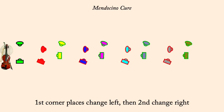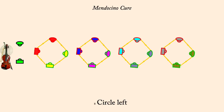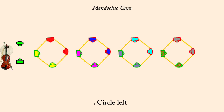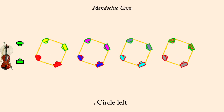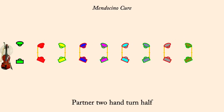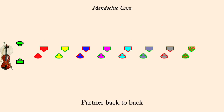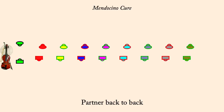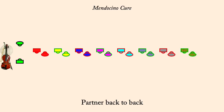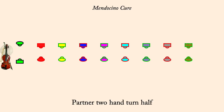Circle left. Partner two-hand turn half. Partner back-to-back. Partner two-hand turn half.